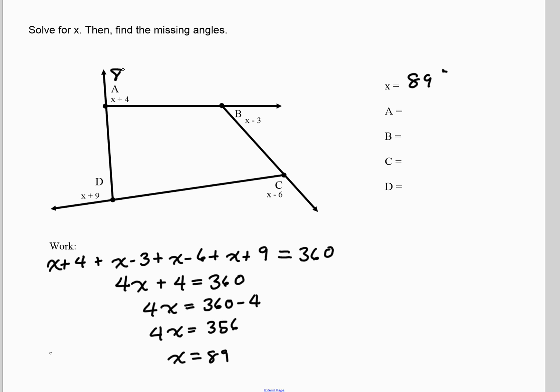Then I can substitute. So 89 plus 4 would be 93, so that one would be 93 degrees. And likewise, 89 minus 3 would be 86 degrees. And 89 minus 6 would be 83 degrees. And 89 plus 9 would be 98 degrees. Also, keep in mind that the angles are not going to be drawn exactly to scale, so you just have to go with what the math tells you, not so much what the picture looks like.